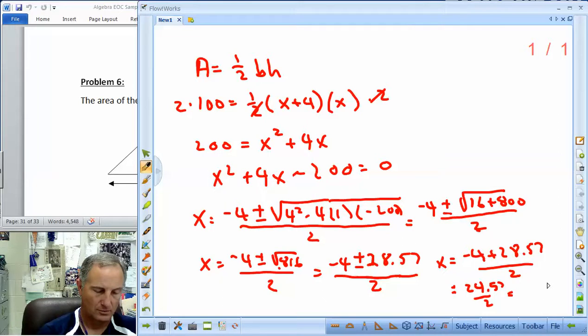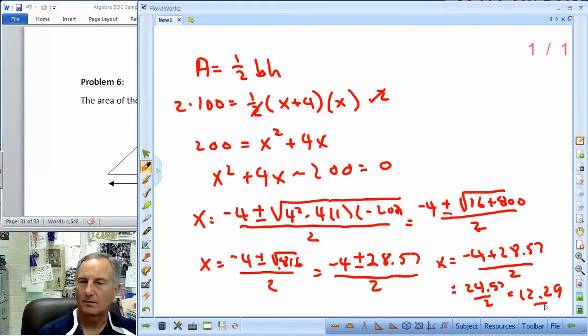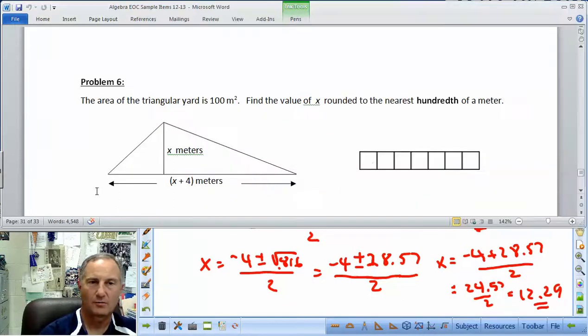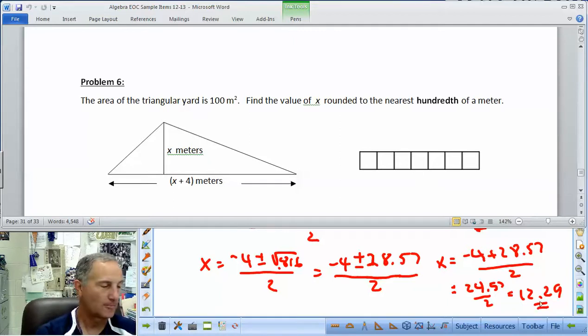That's going to equal 24.57 all over 2. And half of that is 12.29. That's the answer we're looking for. 12.29 or 12.29. And the answer I gave is 12.28 in the book. So I'd say we're pretty good right there. 12.29, 12.28. We're good.